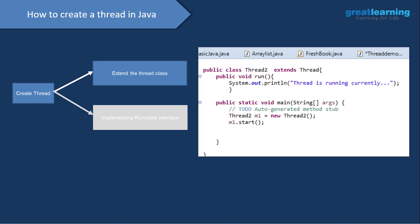When you go for extending the Thread class, you need to override the run method. I have public void run(). In the run method, I print 'thread is running currently'. After that, in the main method — where the Java program starts executing — I create an object: Thread2 m1 = new Thread2(). Then I call m1.start() to start the thread. The output will be 'thread is running currently'.